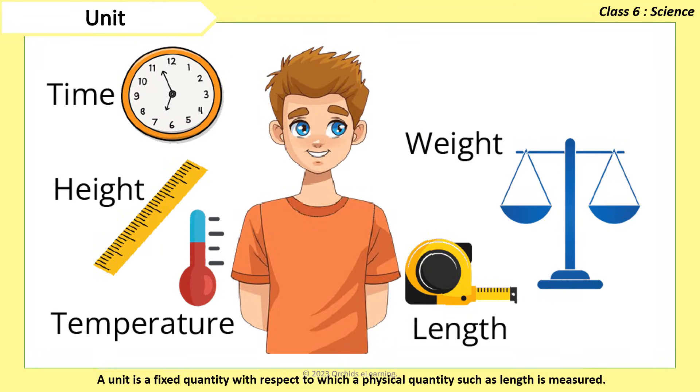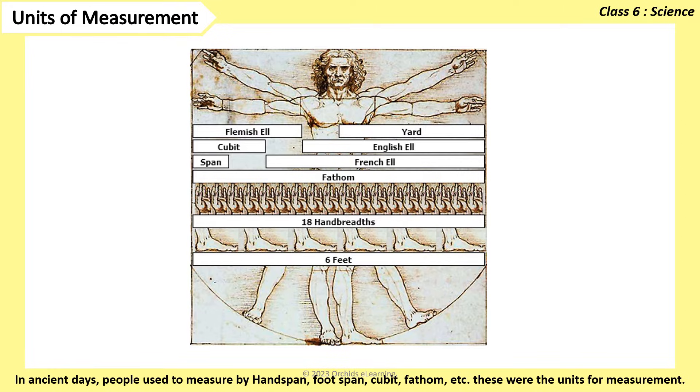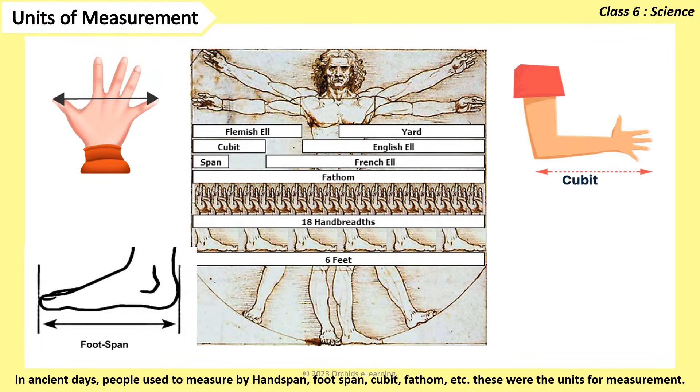A unit is a fixed quantity with respect to which a physical quantity such as length is measured. In ancient days, people used to measure by hand span, foot span, cubit, fathom, etc.